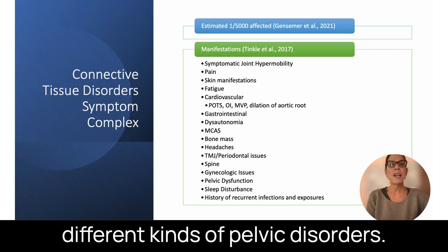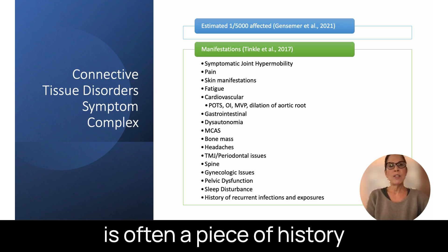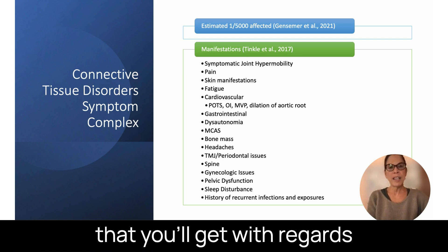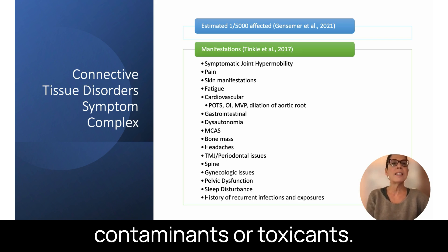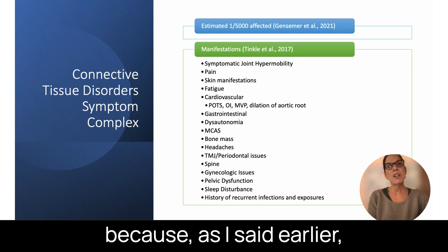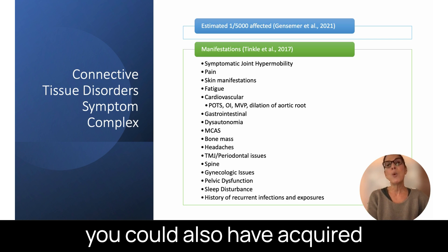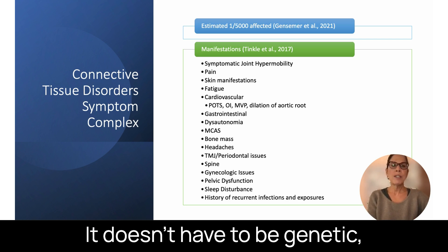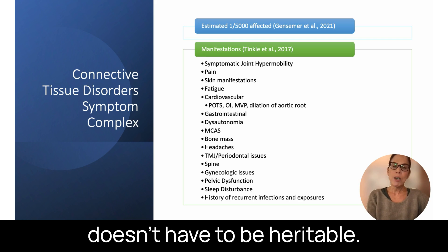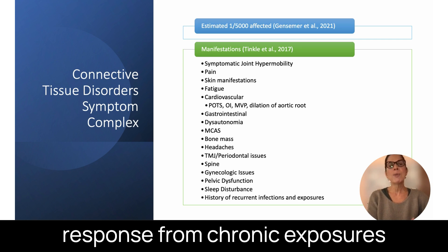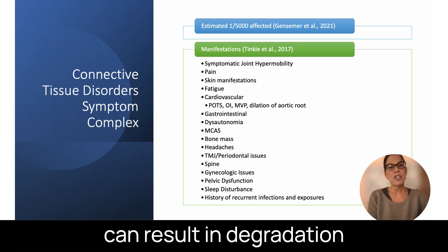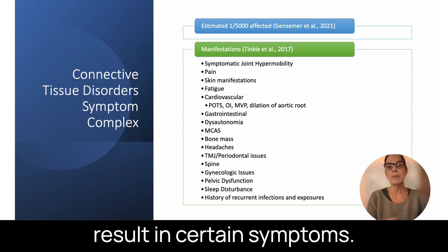Over time they would have periods where a certain organ system was involved — pain syndromes, difficulty with autonomic control, allergies or breathing, rashes, sleep disturbances, and different kinds of pelvic disorders. There are often lots of exposures in the history, including infectious exposures or environmental contaminants or toxicants. That's important because you can also have acquired connective tissue disorder — it doesn't have to be genetic or heritable. Chronic inflammatory responses from exposures can result in degradation of connective tissue and produce certain symptoms.